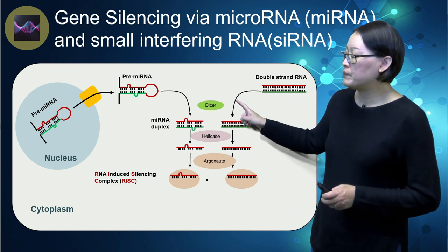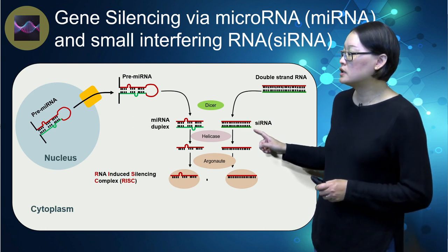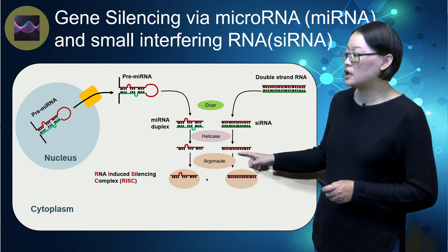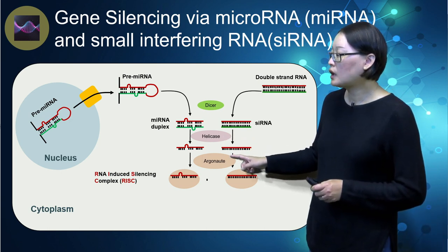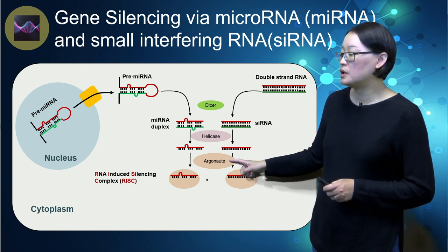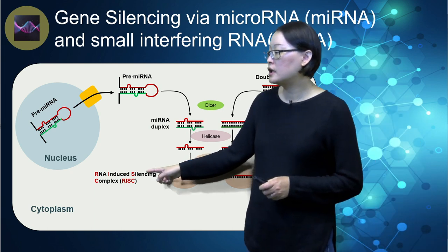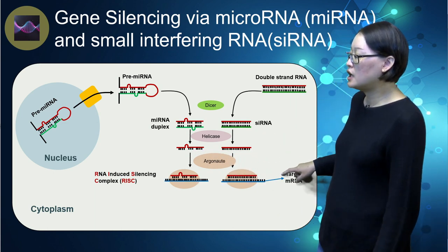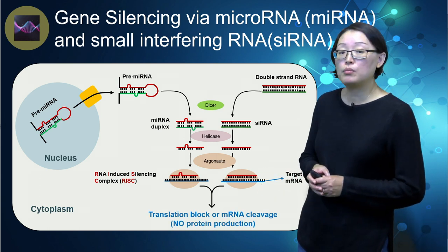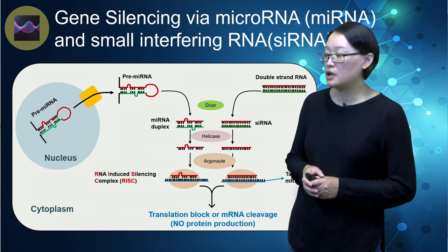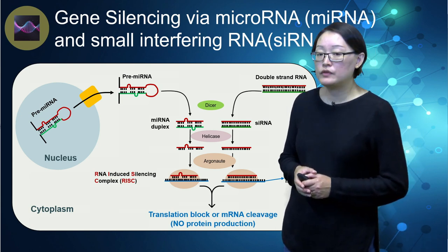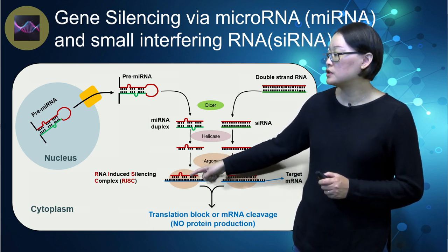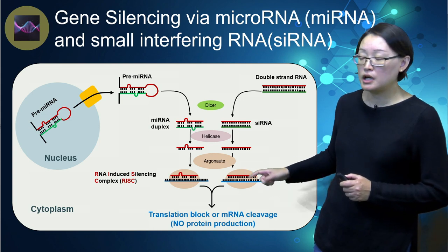Both microRNA and siRNA go through a similar process of dicing, forming one strand, and binding to a protein. The Dicer enzyme creates a short duplex of microRNA or siRNA, usually around 20 to 25 base pairs. One strand of the duplex is then removed by the enzyme Helicase, and the remaining strand binds to a protein known as Argonaute to form the RNA-induced silencing complex, also known as RISC. RISC can then bind to a target mRNA and result in a translation block or cleavage of the mRNA. A key difference is that microRNA can bind to multiple targets due to imperfect base pairing, whereas siRNA can only bind to a specific target.